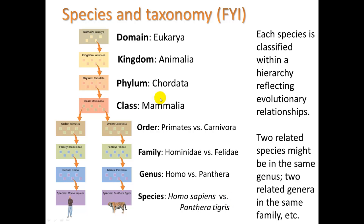As a quick FYI, this part won't be on the quiz or test. But this is how we characterize or categorize life: by domain, kingdom, phylum, class, order, family, genus, species. You may have learned this in life science in junior high. Genus and species are usually the names we see. For example, Homo sapiens is the genus Homo and the species sapiens. For a tiger, it's the genus Panthera and the species Panthera tigris.